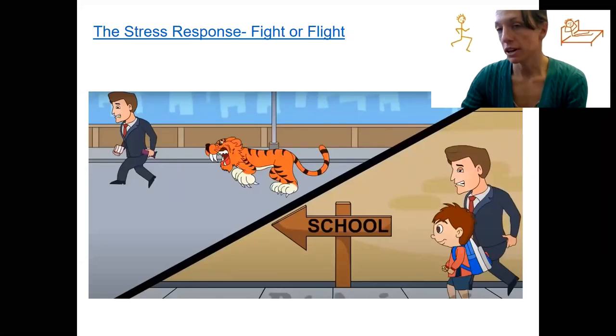Fight or flight, rest and digest - your body decides to do each of these based on environmental stimuli. Historically, in terms of evolution, our bodies did fight or flight when there was a stressor that required us to have an acute stress reaction.